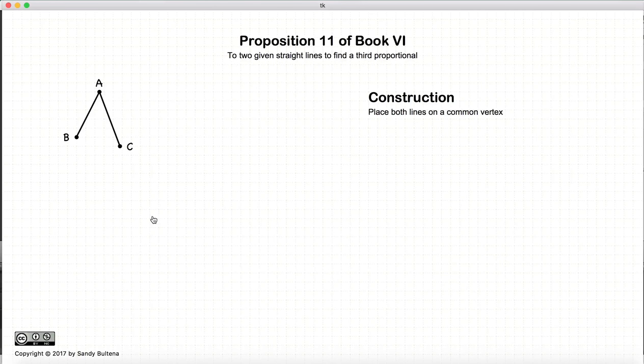So how do we do this? Well we start off with our two lines, and we draw them such that they come to a common point A. The angle between them doesn't matter. So the angle between these two lines is arbitrary.